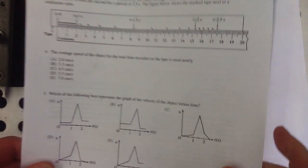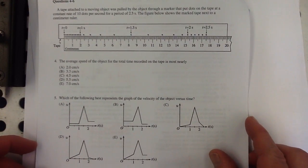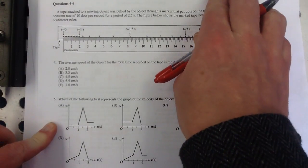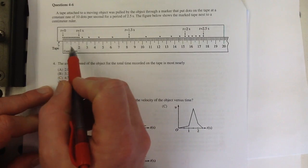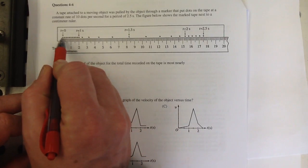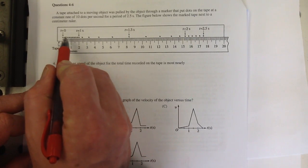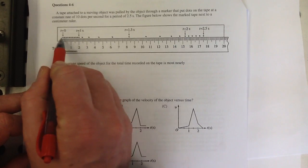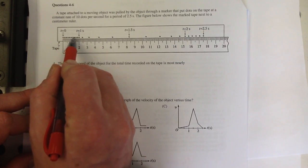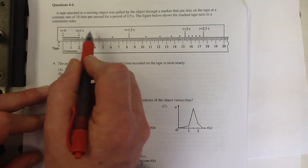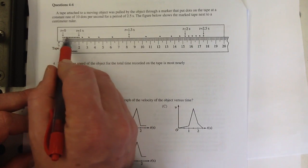Ooh, this looks like fun. A tape attached to a moving object was pulled by the object through a marker, puts dots on the tape at a rate of 10 dots per second. So the tape is getting pulled through—at time zero it's here. Dot, dot, dot, dot, dot, dot. So here, it's going very slowly here, right? These dots are all very close together. So it did not go very far. These dots are a tenth of a second each.